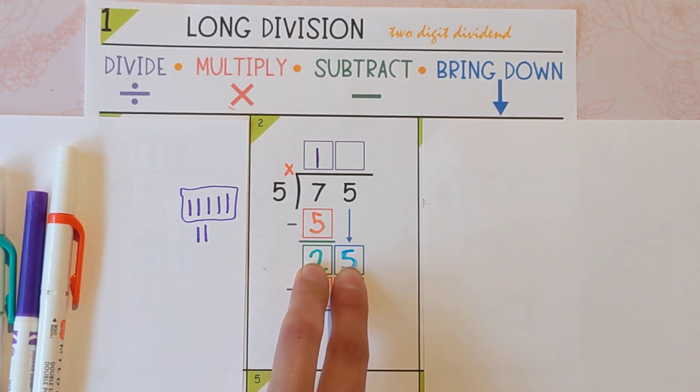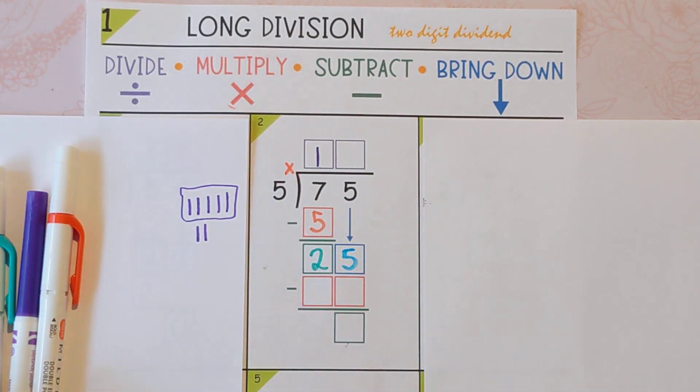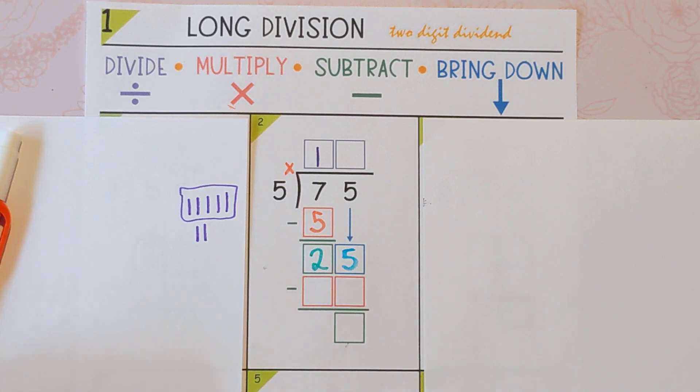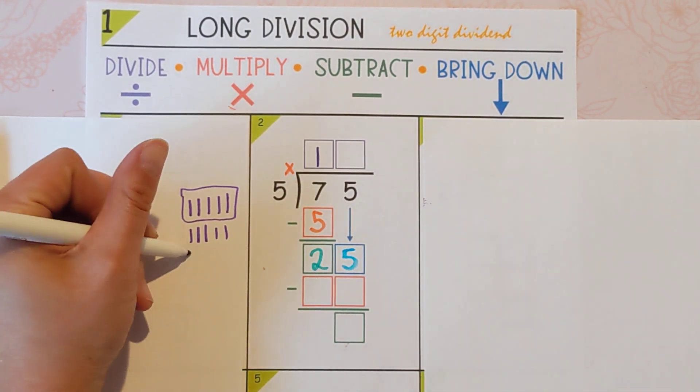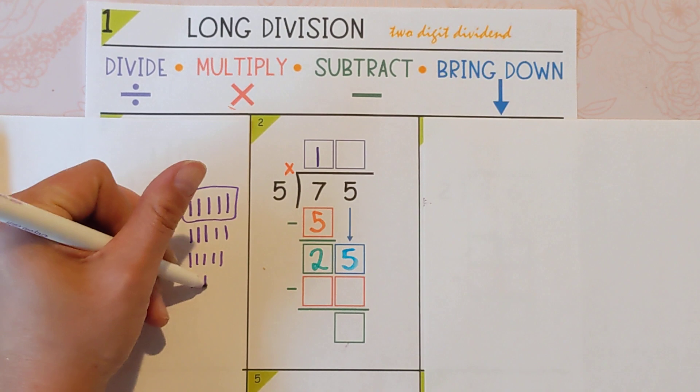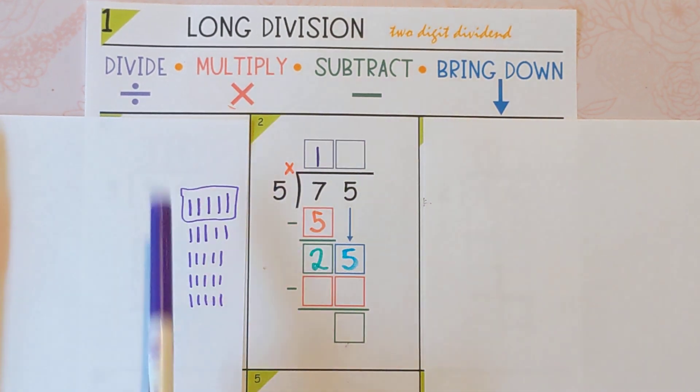And what are we dividing? The last thing we touched, so the 25. And we are dividing 25 divided by 5. Now you could do the same thing where you could draw 25 tick marks and you could say, okay, how many groups of 5 can you make?